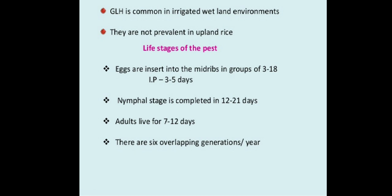The green leaf hopper (GLH) is a common pest in irrigated wetland environments and is not prevalent in upland rice. Life stages: eggs are inserted into the midribs of leaves in groups of 3 to 18. Incubation period is about 3 to 5 days. The nymphal stage is completed in 21 days. Adults live for about 7 to 12 days. There are 6 overlapping generations in a year.